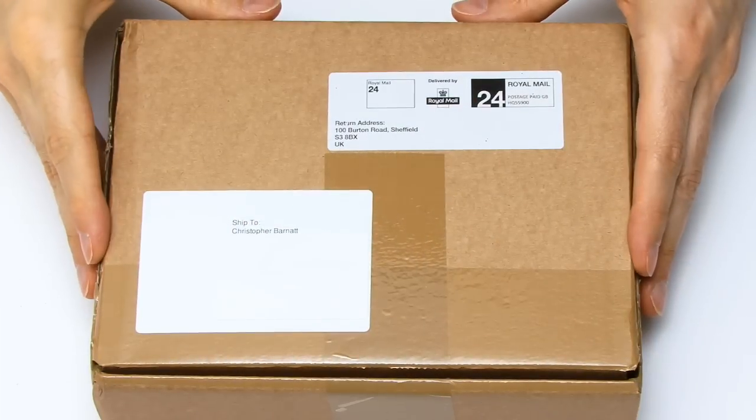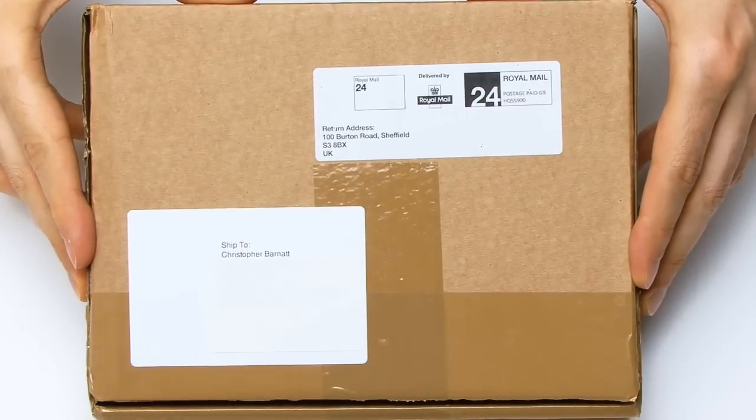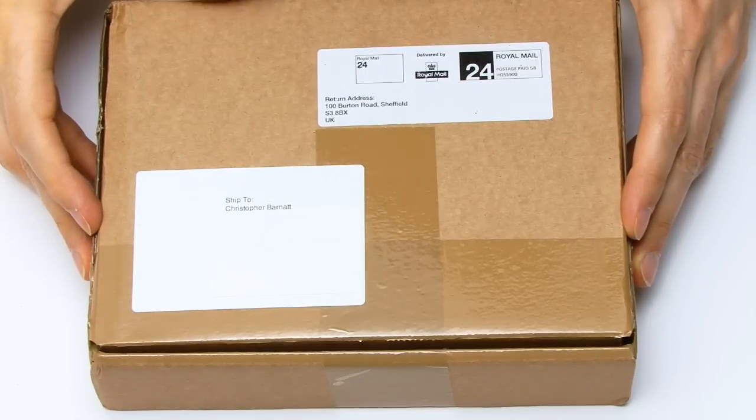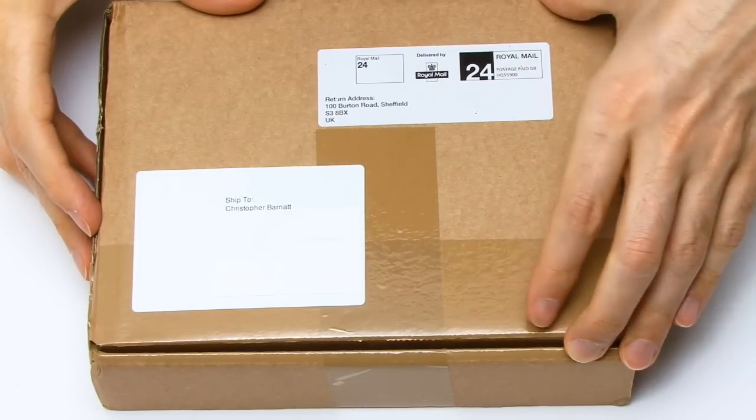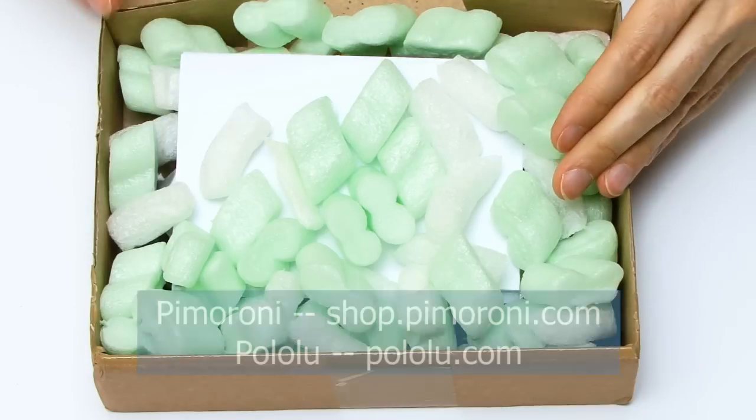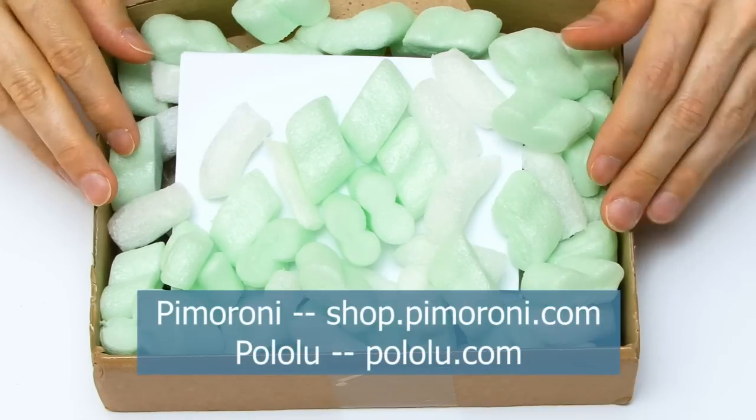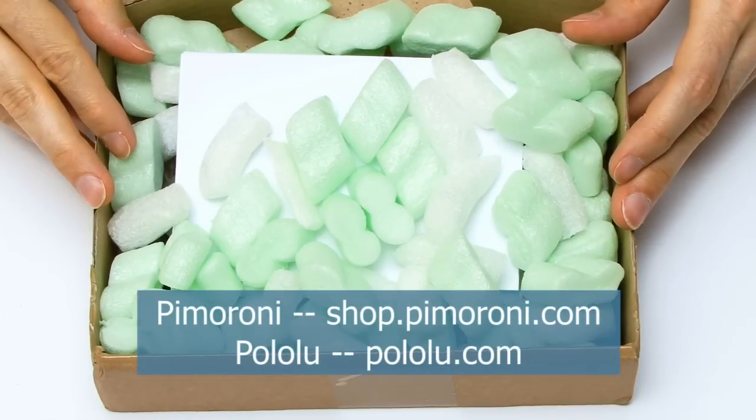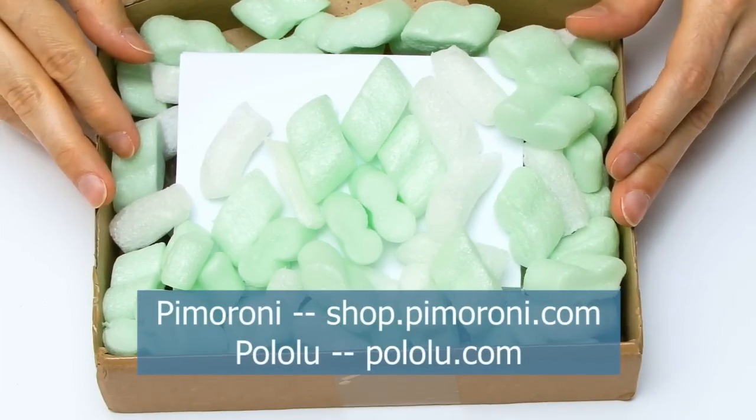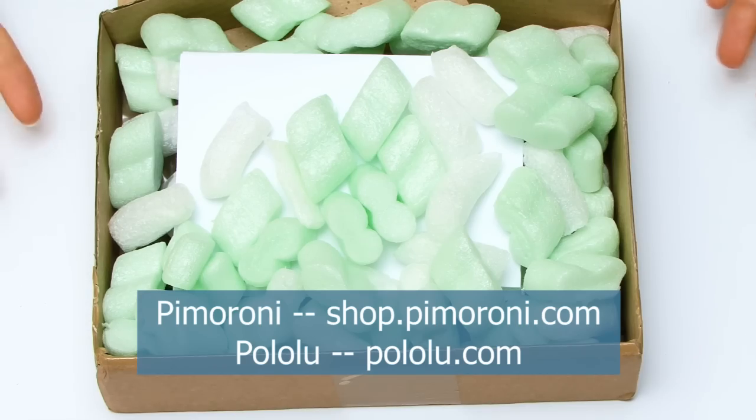In preparation for this build I bought this exciting box of parts from Pimoroni, who are the UK supplier of Pololu Robotics. I suggest if you're in the UK or Europe you might want to buy from Pimoroni. If you're in the US you might want to go directly to Pololu.